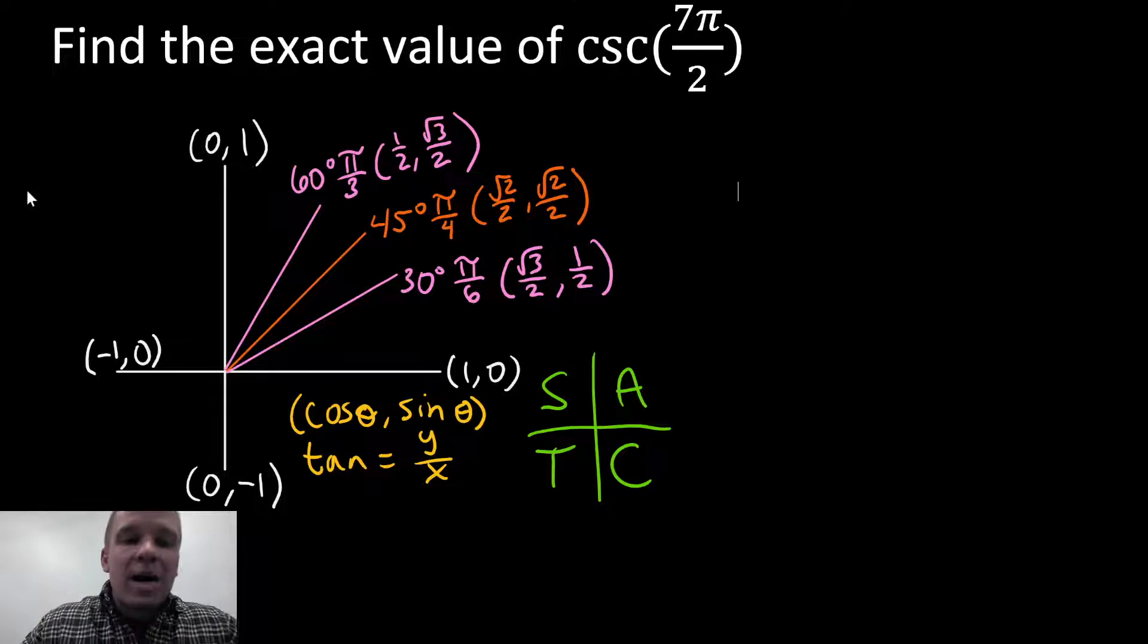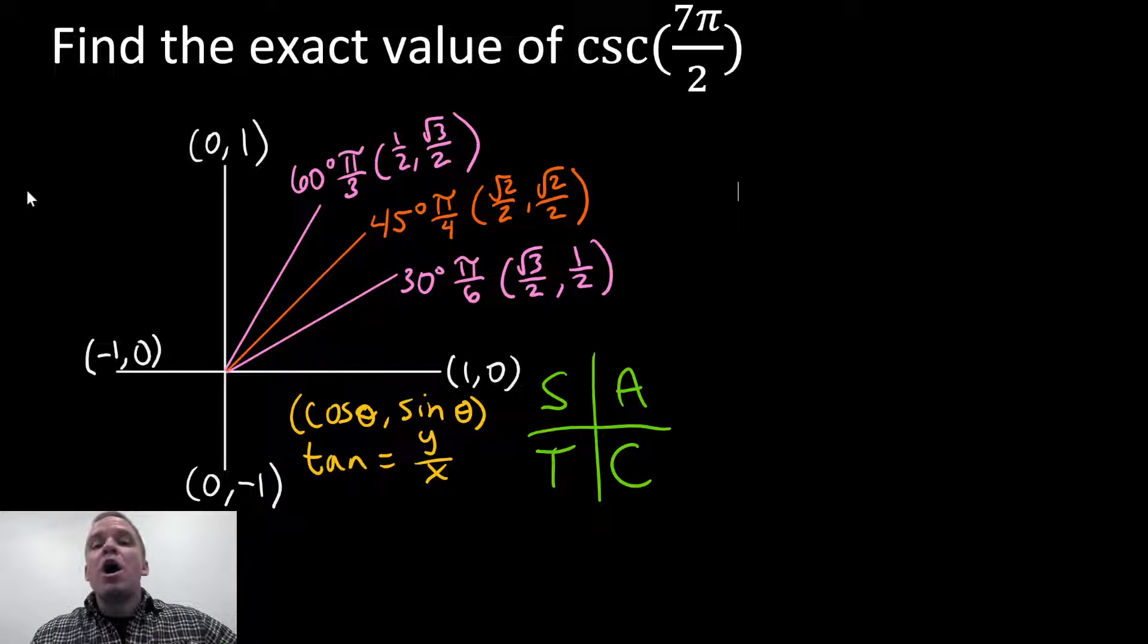What's happening, dogs? Mr. Allen here. We're gonna find the exact value of cosecant of seven pi over two. What? Seven pi over two? That's a quadrantal, isn't it? Well, let's figure this out.